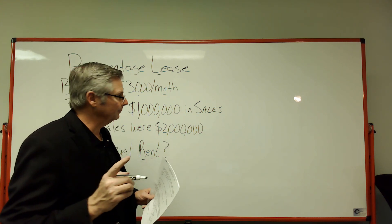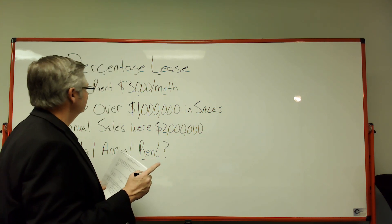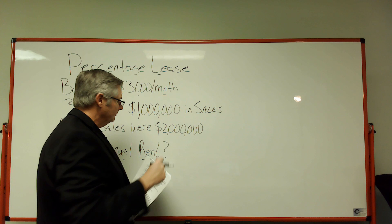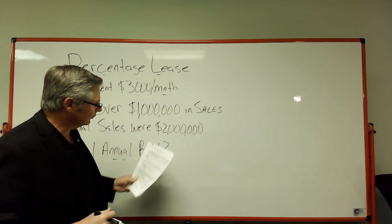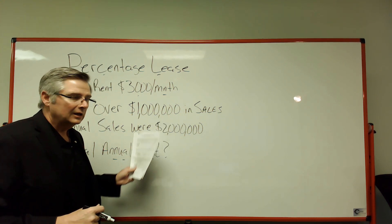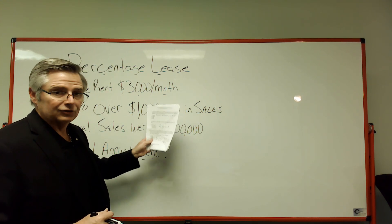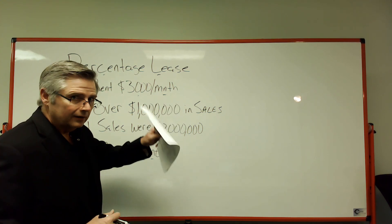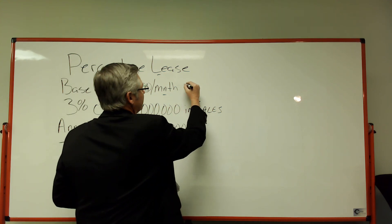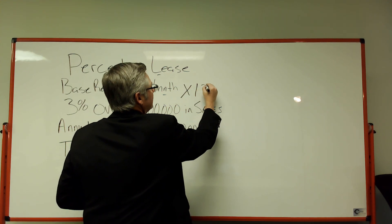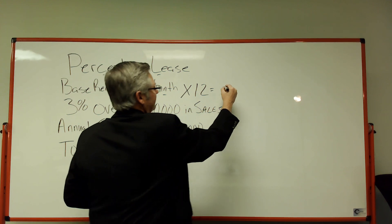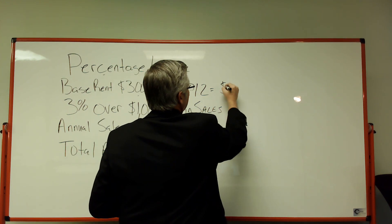They're asking for an annual number, so the first thing I'm going to do is figure out what the base rent is for the whole year. Remember to keep your units lined up - they're asking for an annual number, so you're going to turn that monthly number into an annual number. We know there are 12 months in the year, so we multiply three thousand times 12, and that's thirty-six thousand dollars.